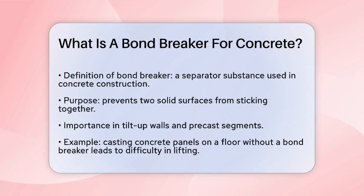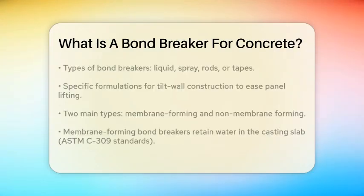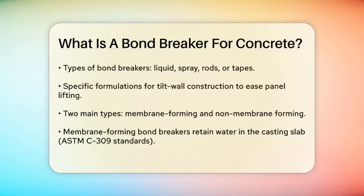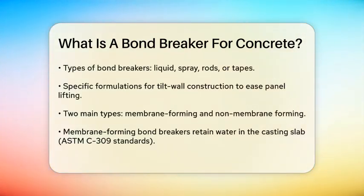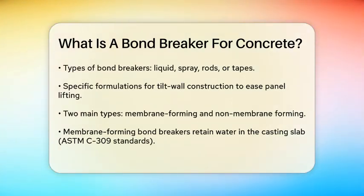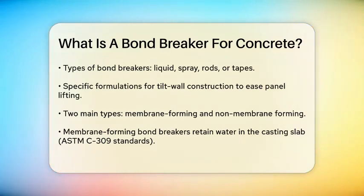These bond breakers can come in various forms, such as liquid, spray, rods, or tapes. For instance, in tilt wall construction, specific bond breakers are formulated to ensure the panels can be lifted easily without sticking to the casting bed.